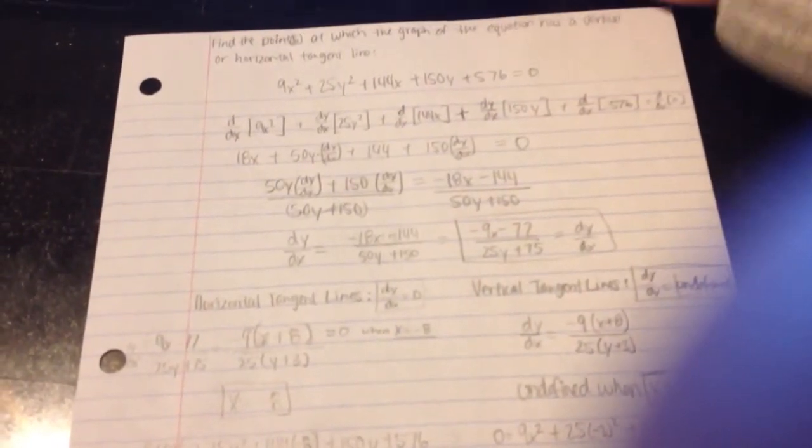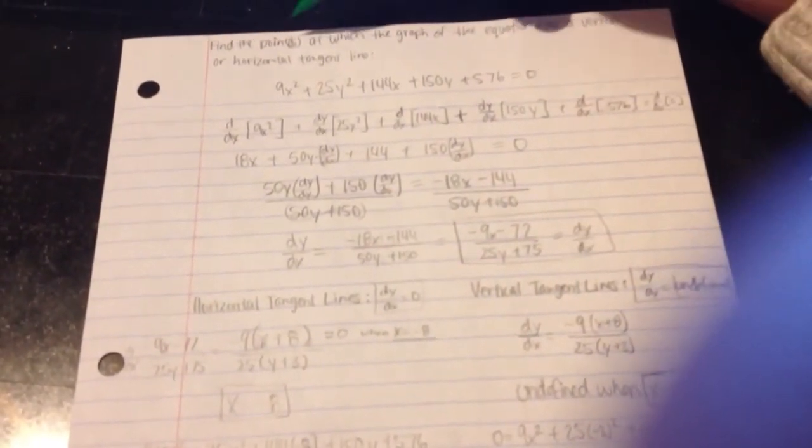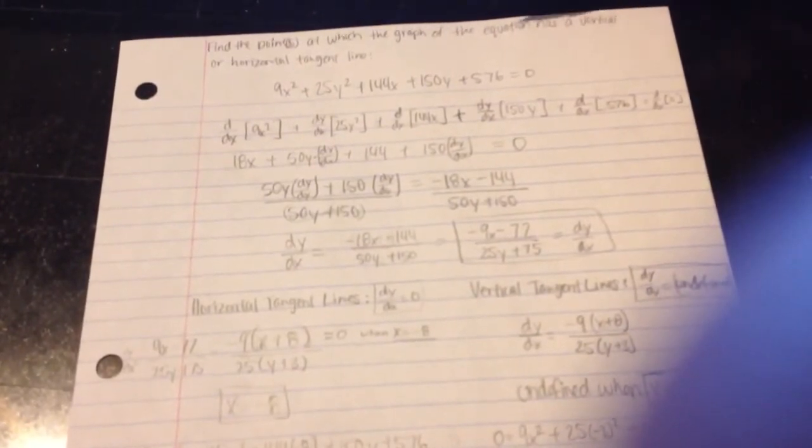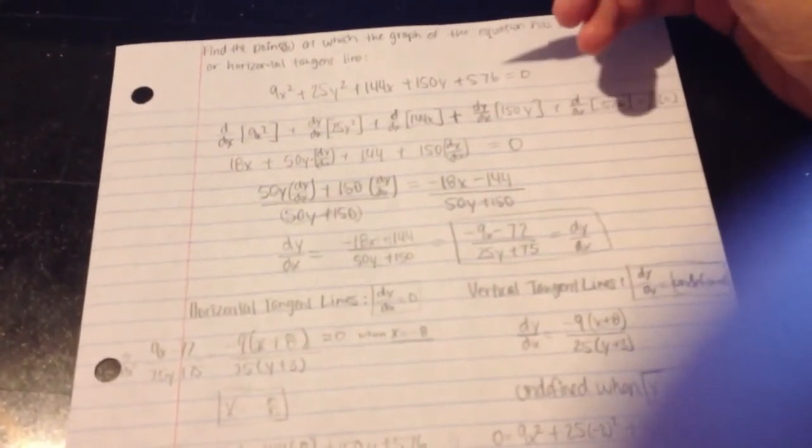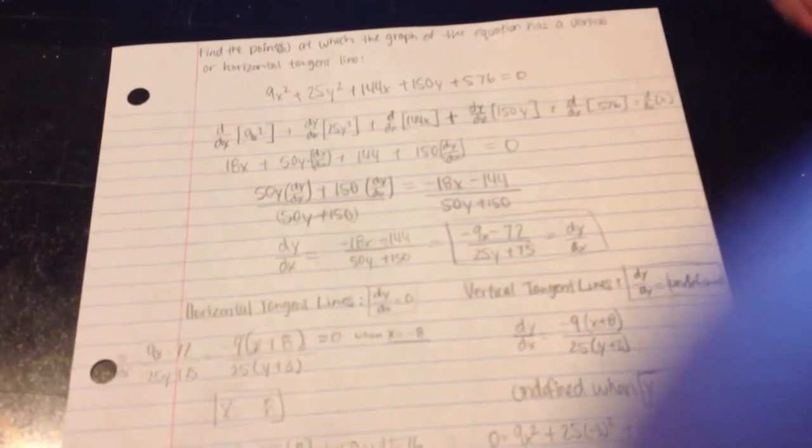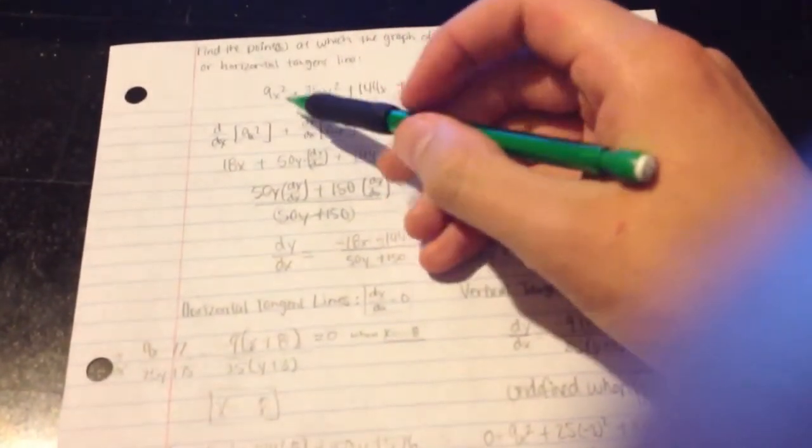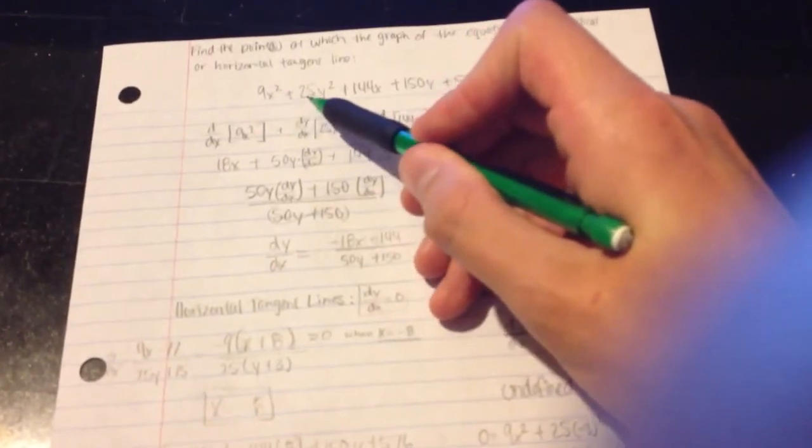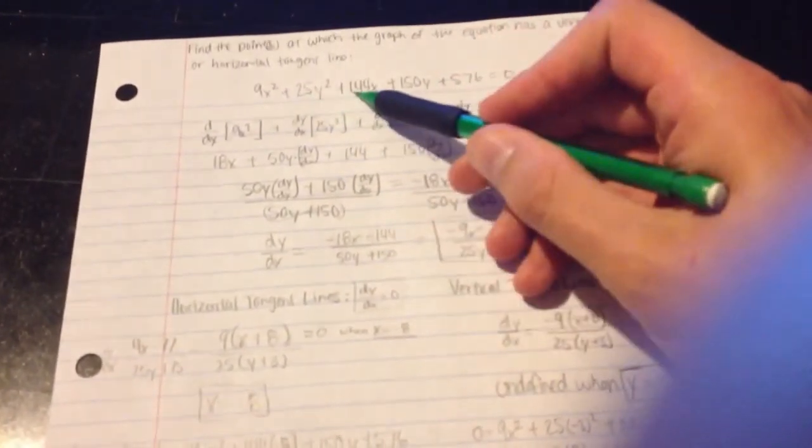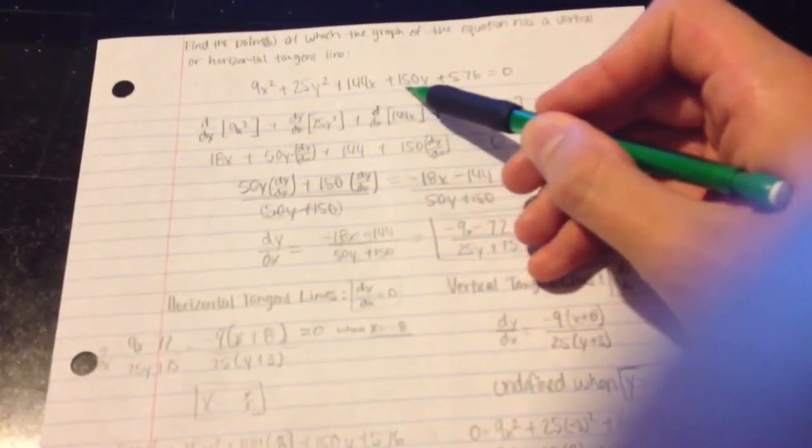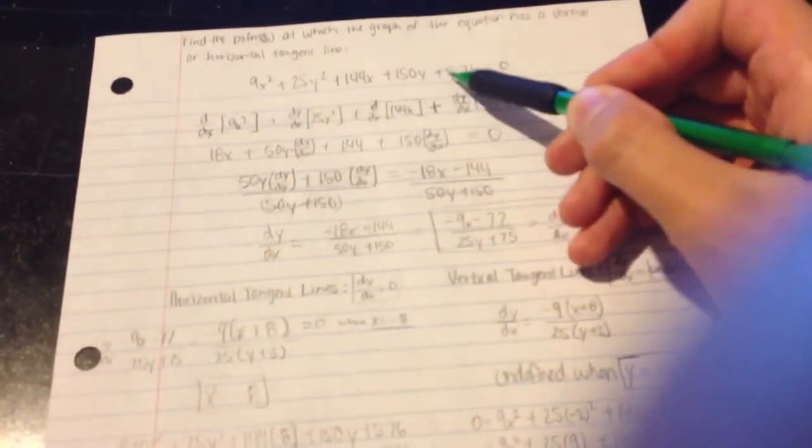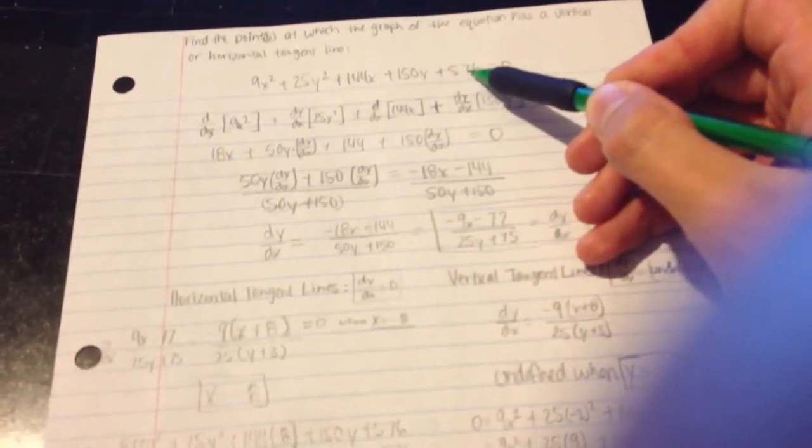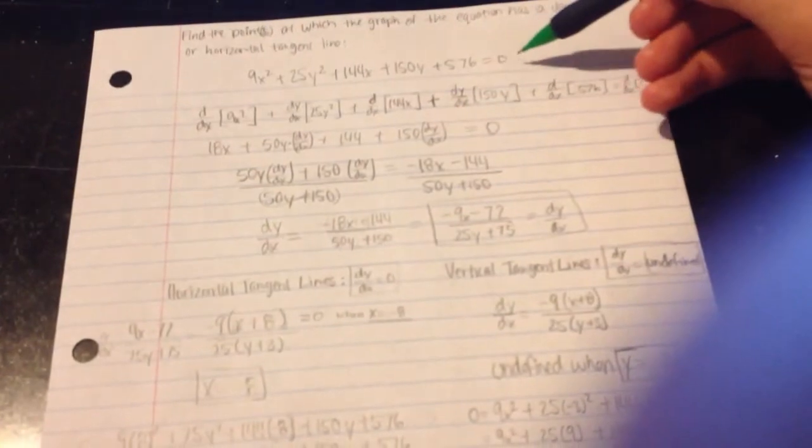In this problem we are finding the points at which the graph of the equation has a vertical or horizontal tangent line. You're starting with 9x squared plus 25y squared plus 144x plus 150y plus 576y is equal to 0.